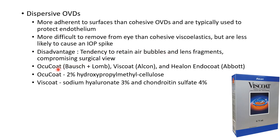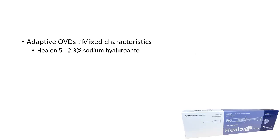Examples of dispersive OVDs include Aquacoat manufactured by Bausch and Lomb, Viscoat by Alcon, and Healon Endocoat by Abbott. Aquacoat contains 2% hydroxypropylmethylcellulose, and Viscoat contains sodium hyaluronate 3% and chondroitin sulfate 4%. This picture shows Viscoat, which contains a combination of sodium hyaluronate and chondroitin sulfate.